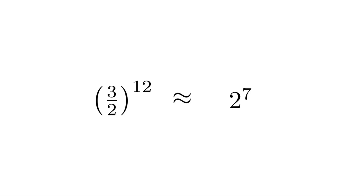This approximate equality has a certain musical interpretation. We see that two notes are separated by an octave if one note is twice the frequency of the other. And we see that two notes are separated by a fifth if one note is 3 halves the frequency of the other.